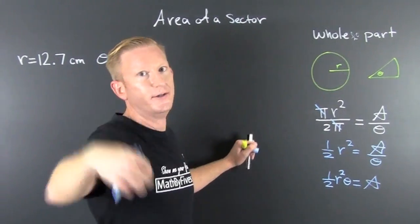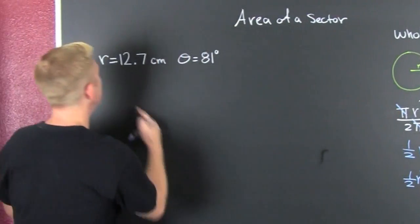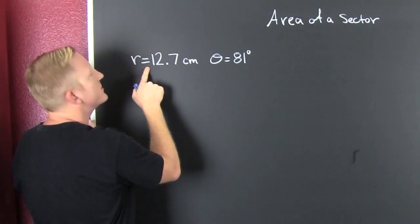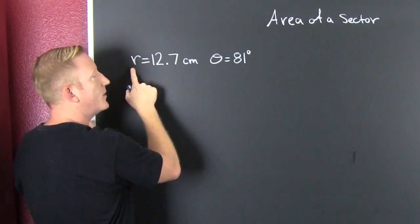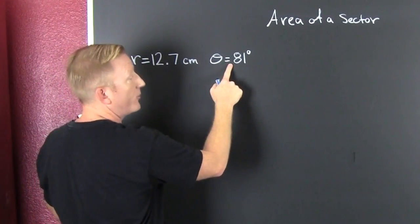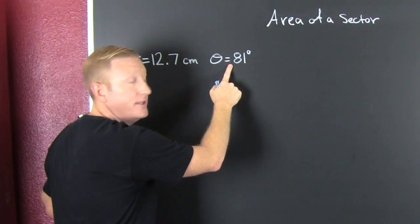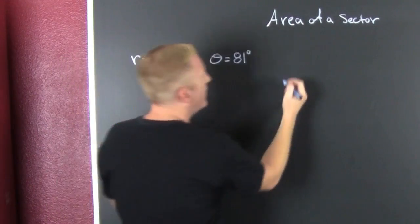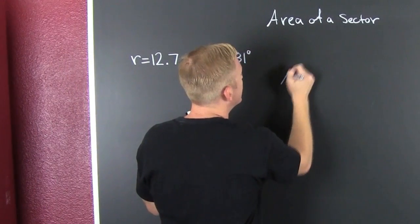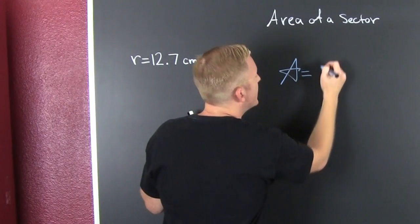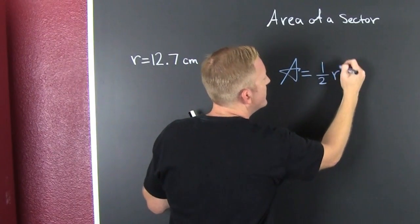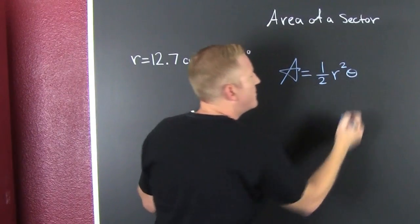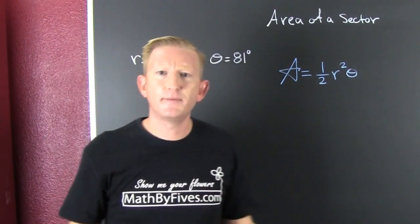So now we can go to our example. Here they give us that 12.7 centimeters is our radius and our theta is 81 degrees. What are we going to use? That fancy area is going to be half r squared theta. But we have a little problem.